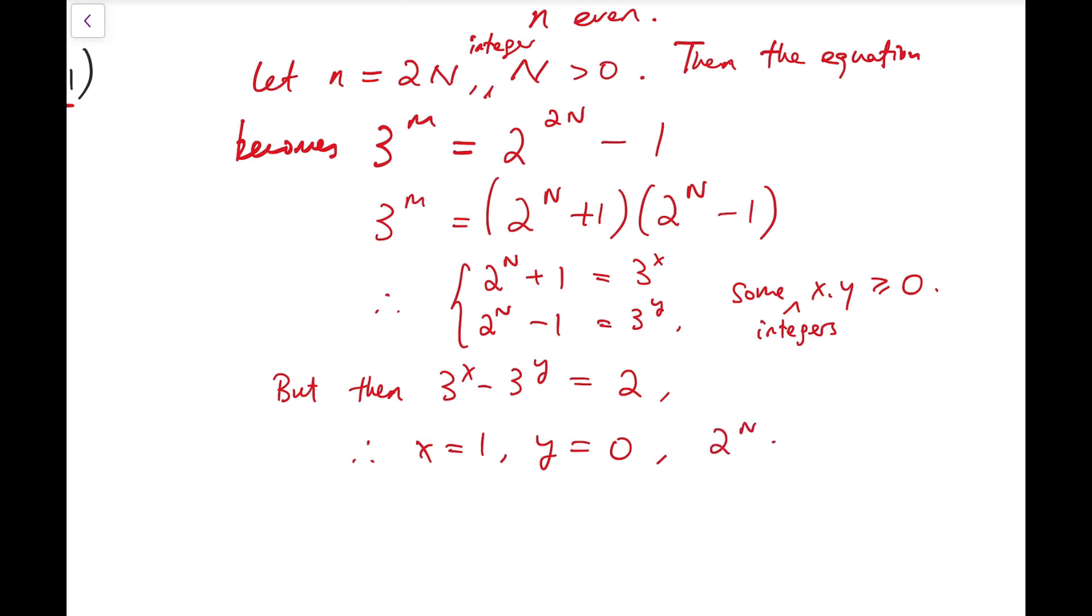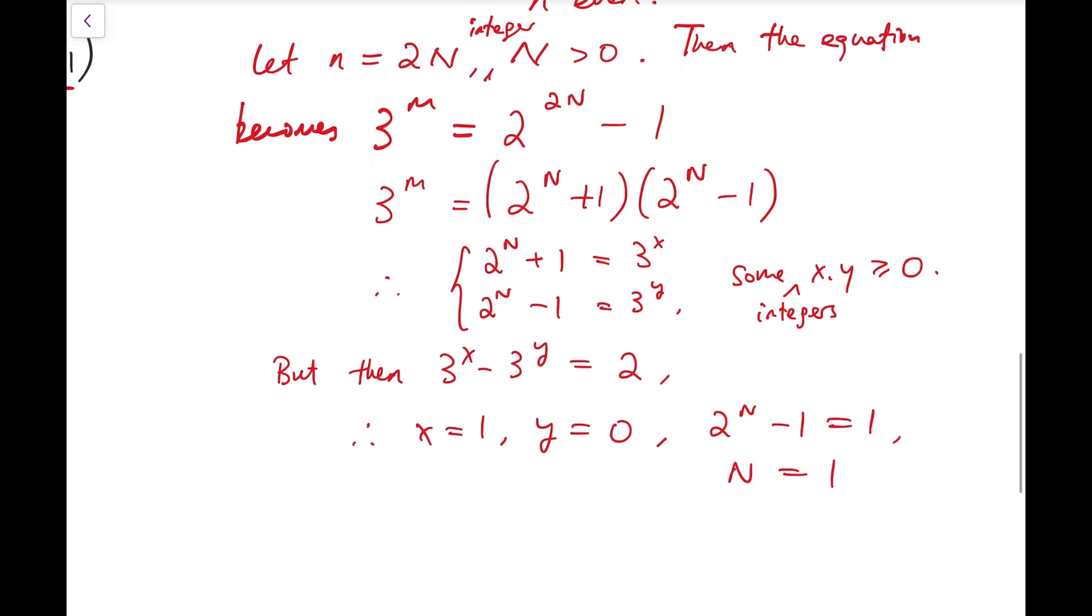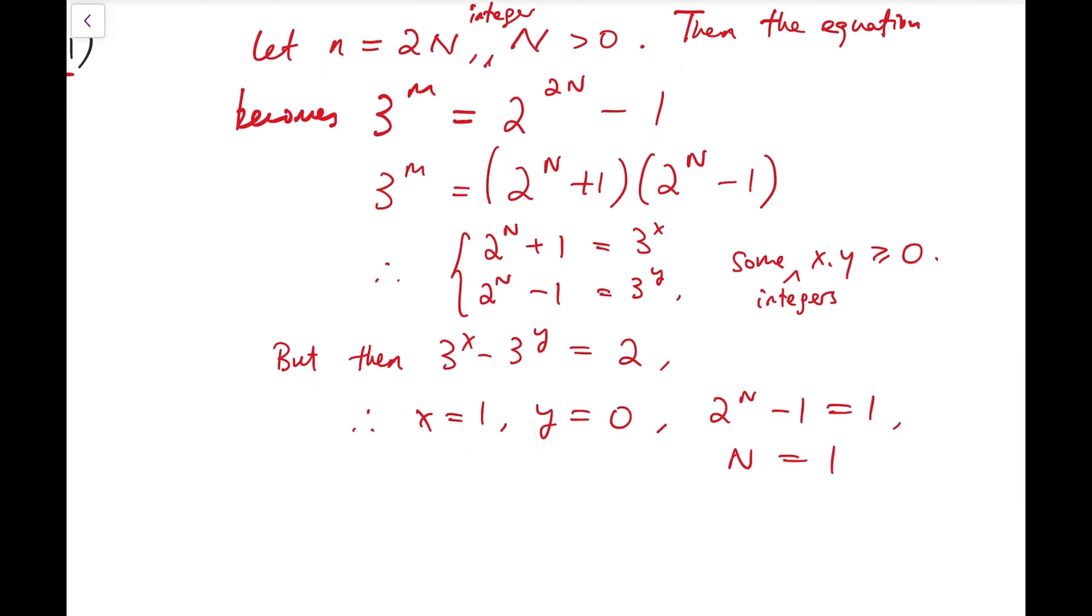So that means x equals to 1, y equals to 0, so 2 to the N minus 1 equals 1 and this big N has to be 1. Now we can further trace back